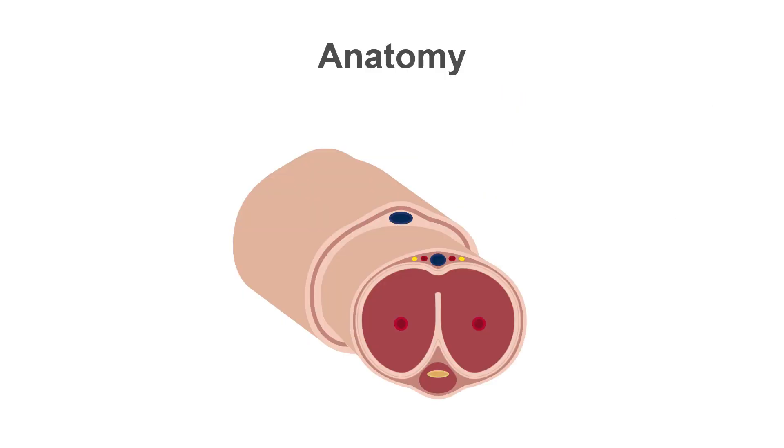Let's quickly review the anatomy of the penis. The urethra, where the urine and semen travel through, is surrounded by the corpus spongiosum. Remember this anatomy when we get into the treatment, because we don't want to inject anything in this area.